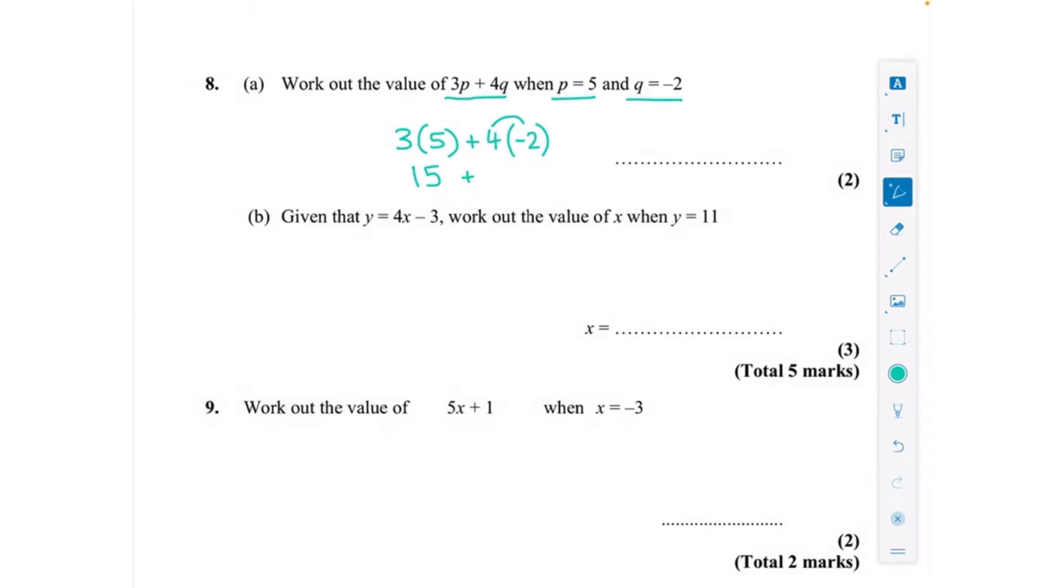And four lots of minus 2, when we have a positive and we're multiplying that by a negative, that makes a negative. So we do 4 times 2 like usual, but if one's positive and one's negative it makes a negative. Now a positive and a negative like this, plus minus next to each other, is going to make a takeaway. So 15 take away 8 equals 7, and that would be my answer for that one.